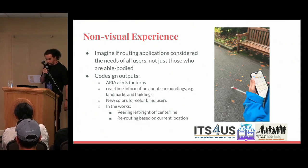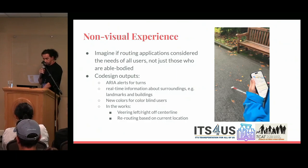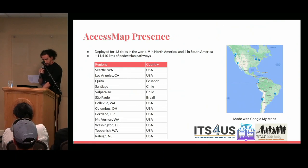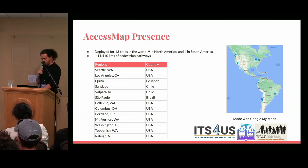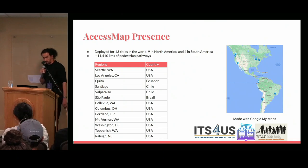Some of the co-design outputs so far: we added ARIA alerts for real-time turn-by-turn info, we added landmarks including buildings and other points, and the colors are designed for colorblind users. AccessMap currently covers 13 cities — nine in North America and four in South America — with about 7,000 miles of pedestrian pathways.